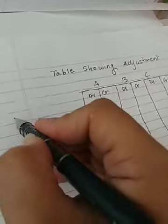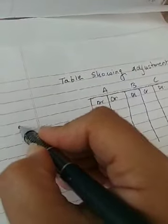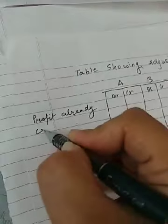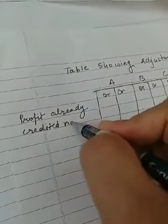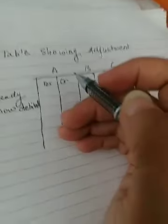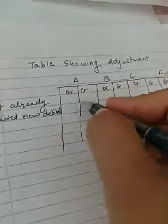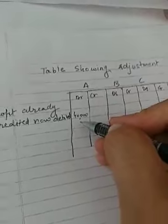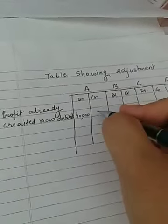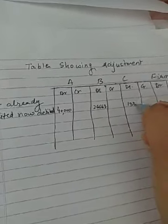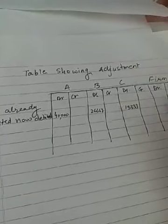Sabse pehle jo profit already distribute kar diya hai partners ko — 80,000 rupees ka — wo aap ne credit kiya tha, usko wapas se debit kar denge. Yahan likhenge: 'Profit already credited, now debited'. Aap ko yeh profit 2:2:1 ke ratio mein distribute karna chahiye tha, but aap ne capital ke ratio (3:2:1) mein distribute kar liya tha. Toh debit mein likhenge: A — 40,000; B — 26,667; C — 13,333; total — 80,000.